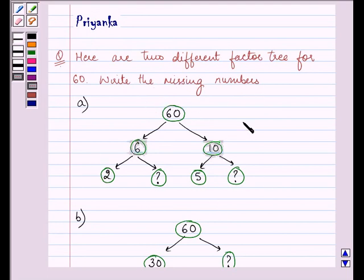Now this is one of the trees which is given to us in which 60 has been split into two factors, that is 6 and 10. As we know, 6 multiplied by 10 will give us 60.